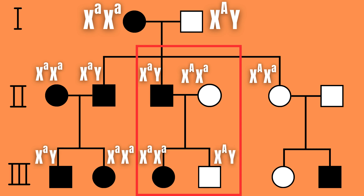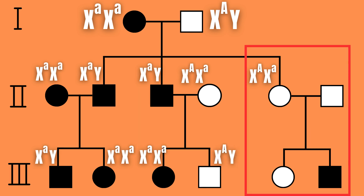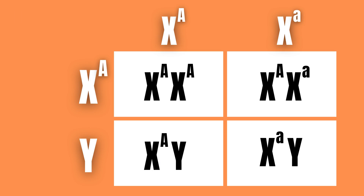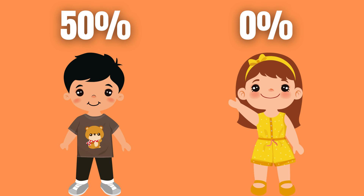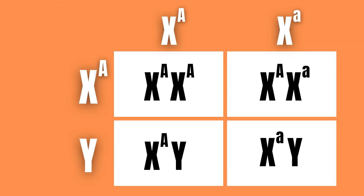Finally, in the subfamily furthest to the right, we already know that the mother is a carrier and that the father's one X-located allele must be dominant since he does not express the trait. When we set up a Punnett square for this situation, we can observe that their children have a 50/50 chance of getting the recessive trait if they are born as boys, but will never gain the recessive trait if they're born as girls.